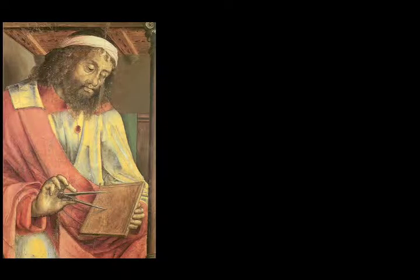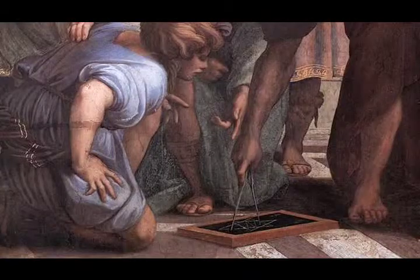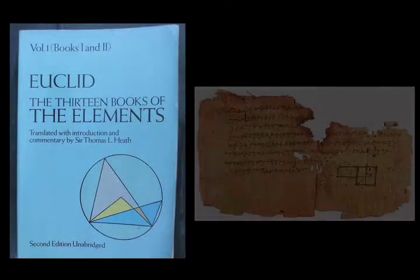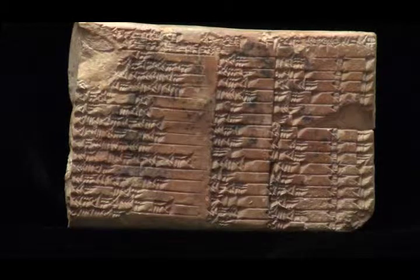It may have been a teaching tool, like a worksheet. Fifteen centuries later, Euclid, a Greek mathematician living in Alexandria, compiled a mathematical treatise known as Euclid's Elements. In addition to rigorous proofs of the Pythagorean theorem, Elements has the first written formula for calculating Pythagorean triples. But had the Babylonians discovered this formula earlier? What do you think?